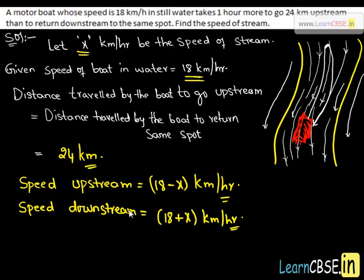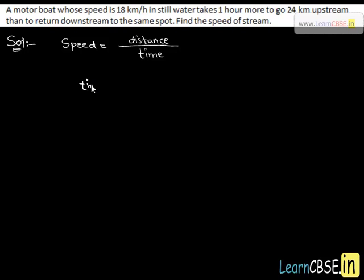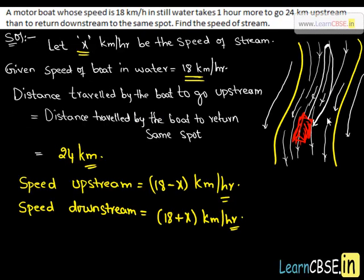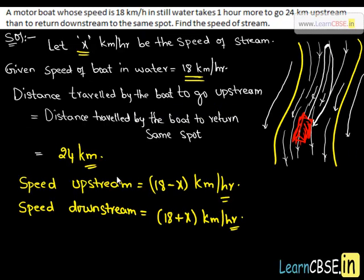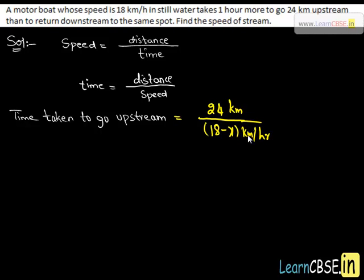By the definition of speed, time is equal to distance divided by speed. Let us find the time taken by the boat to go upstream. It is equal to the distance traveled upstream, which is 24 kilometers, divided by the upstream speed of 18 minus x kilometers per hour. Therefore the time taken to go upstream is 24 upon 18 minus x hours.